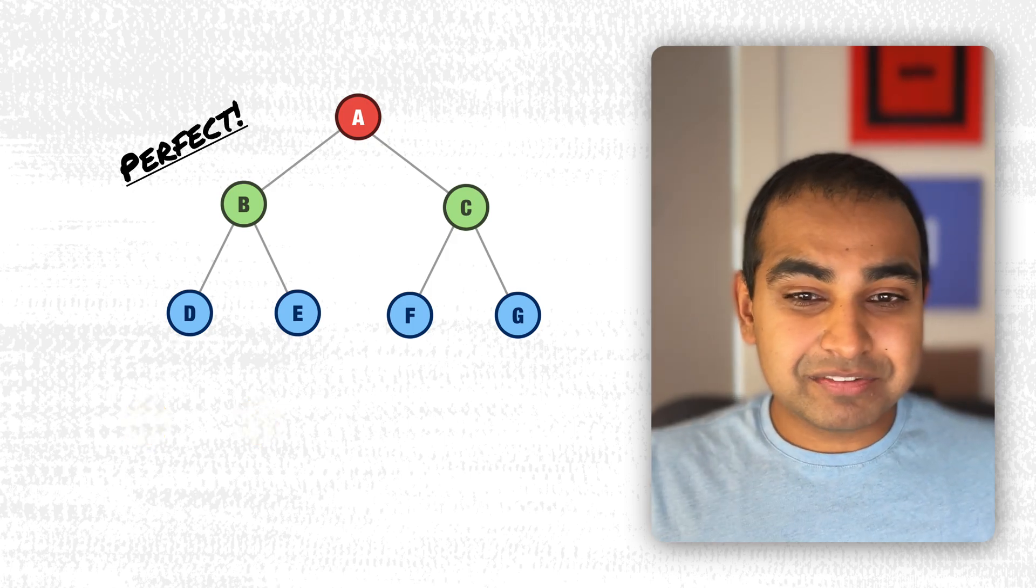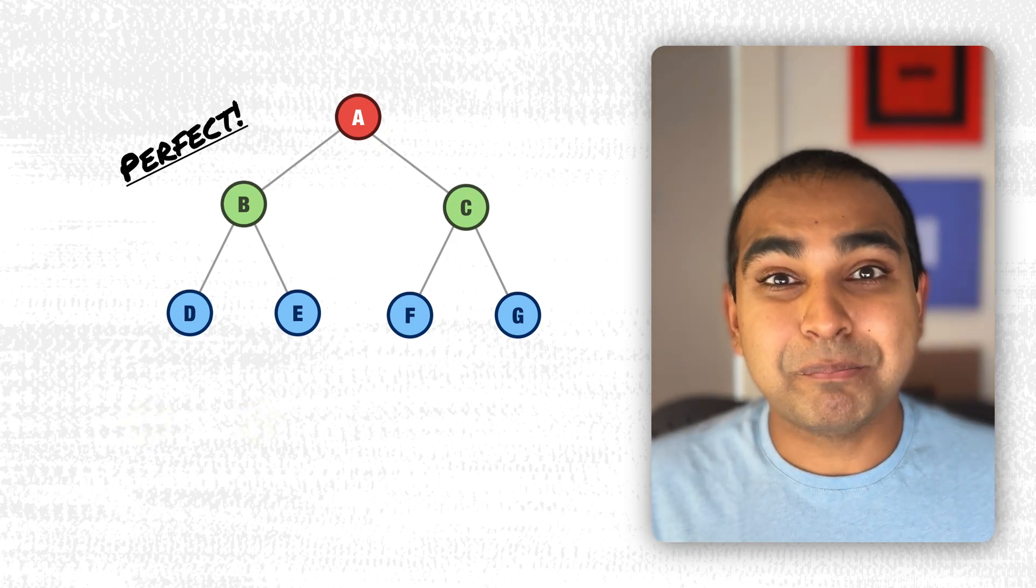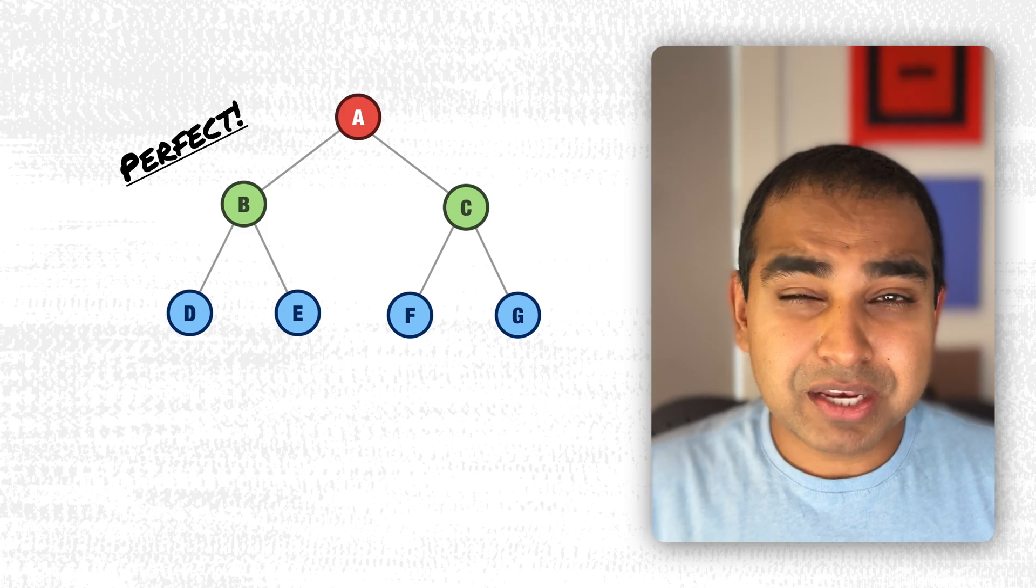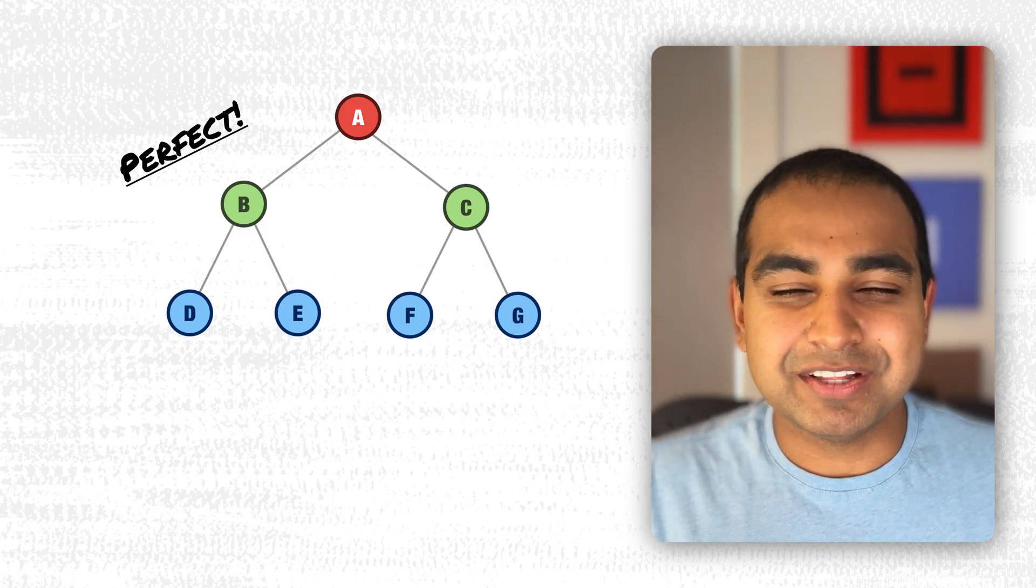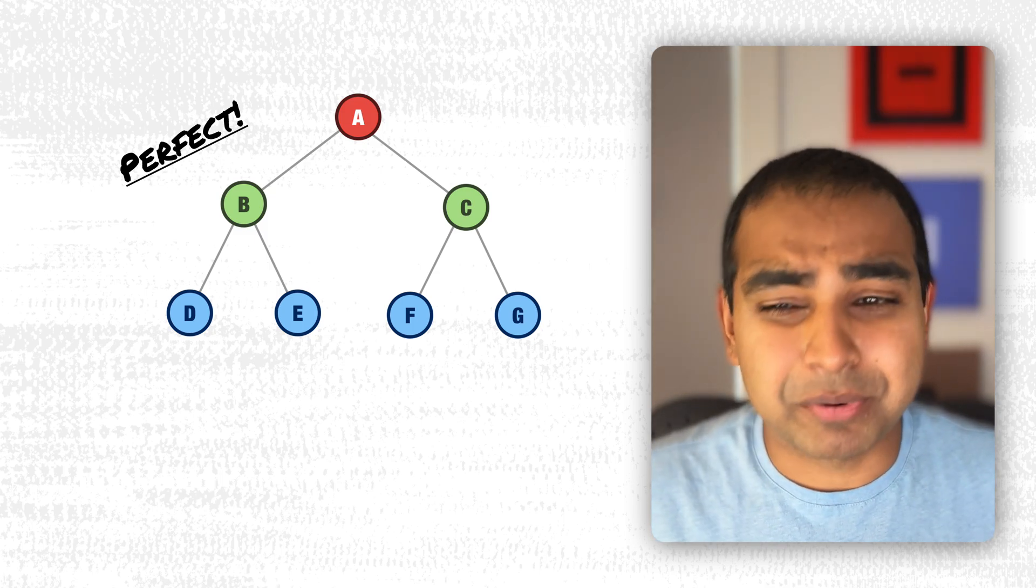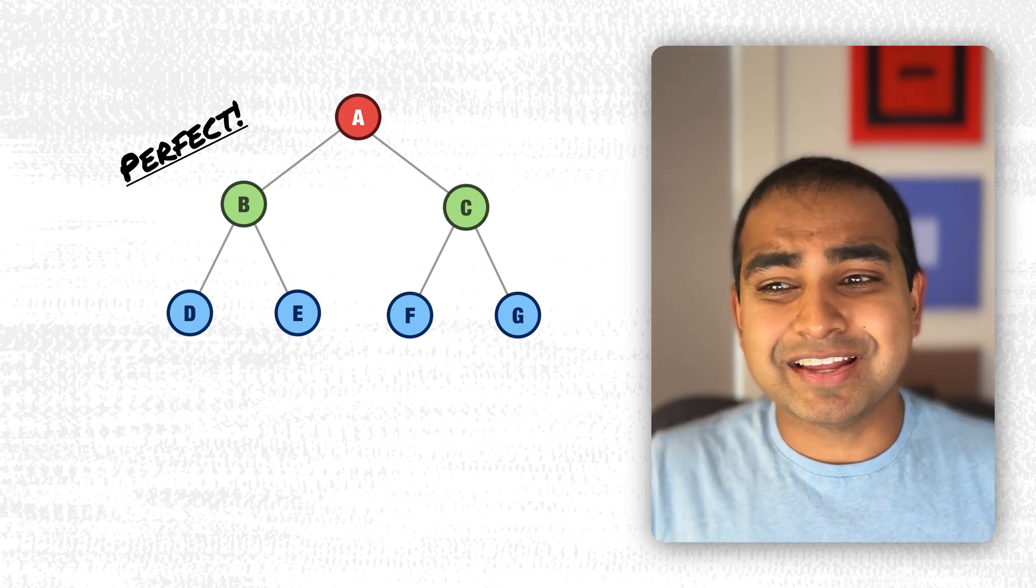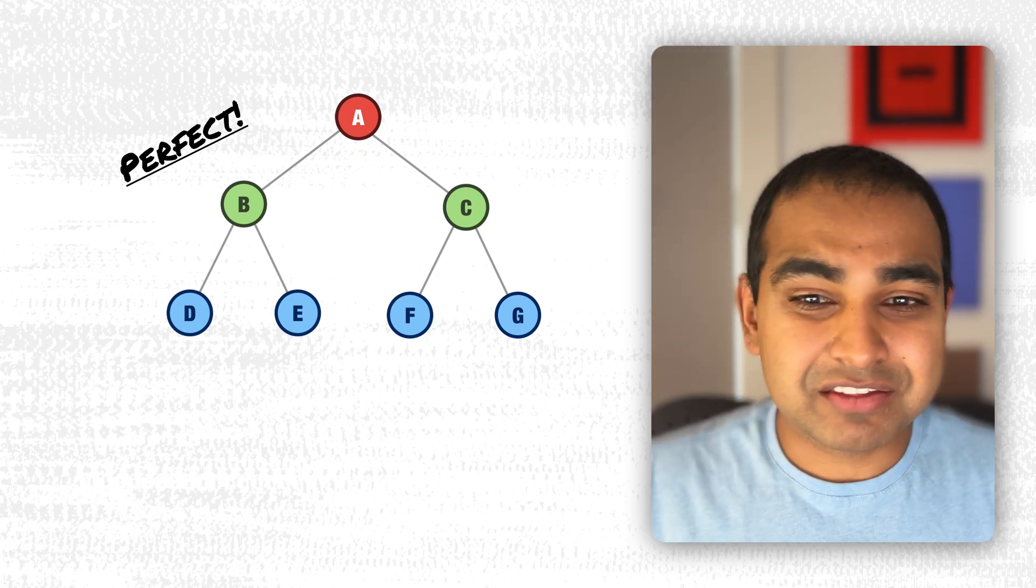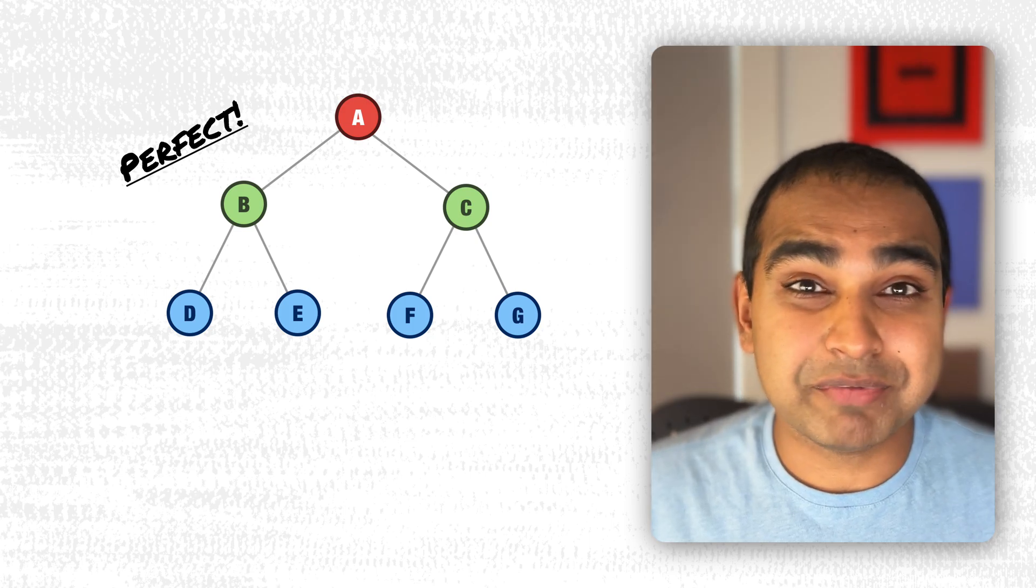The next binary tree variation is known as the perfect binary tree. A perfect binary tree, its name is a little bit confusing. All it means is that every level of the tree is fully filled with nodes. As a consequence of that requirement...